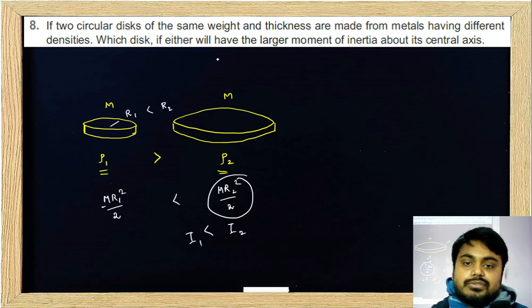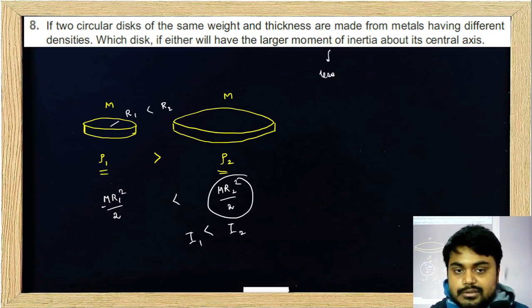Which disc will have the larger moment of inertia about its central axis? The one with lesser density.